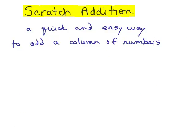I'm going to show you how to do something called scratch addition. It's a quick and easy way to add a column of numbers. So let's say you had something like this: 8, 9, 3, 5, 7, 6, just a bunch of numbers you had to add. So there's a column of numbers.